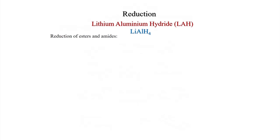Esters and amides can also be reduced. Esters on reduction cleave and generate two alcohols. Amides: the carbonyl becomes CH2, giving an amine, while in the ester case two alcohols are generated.